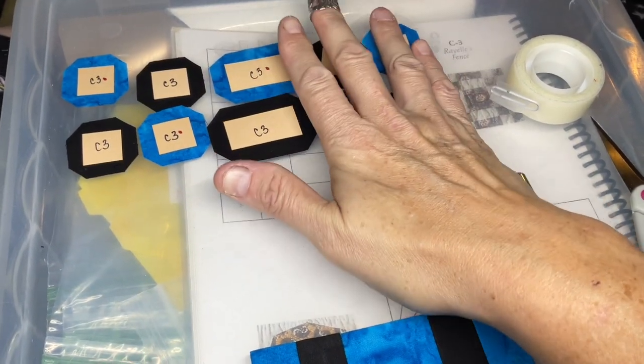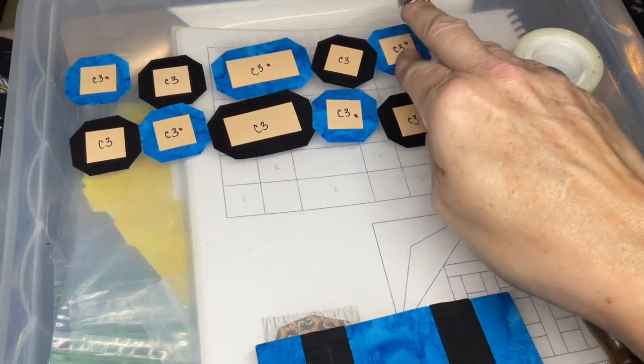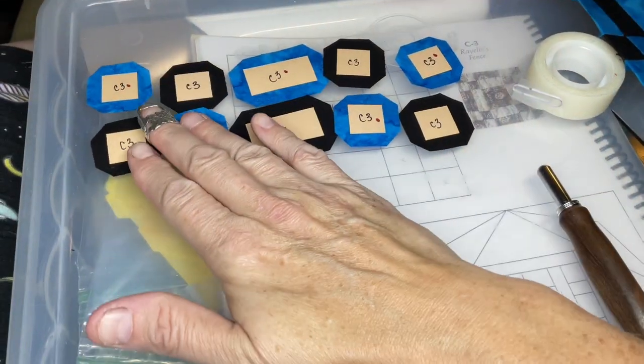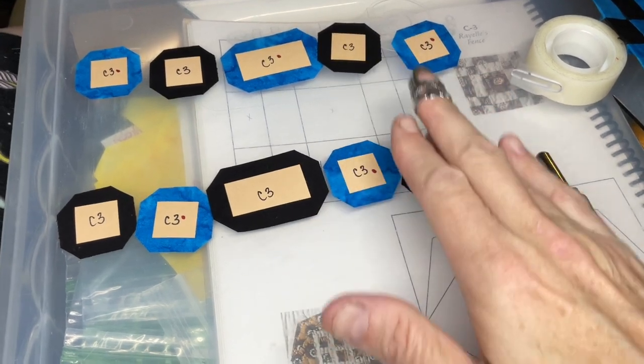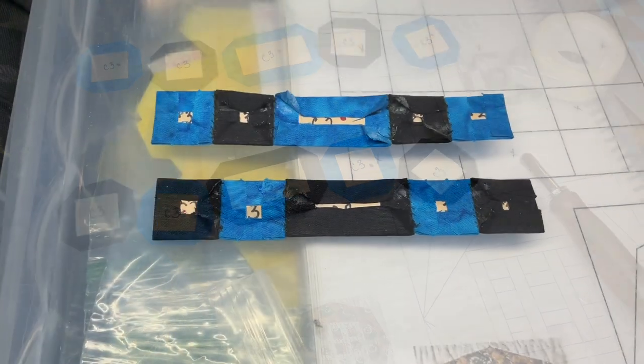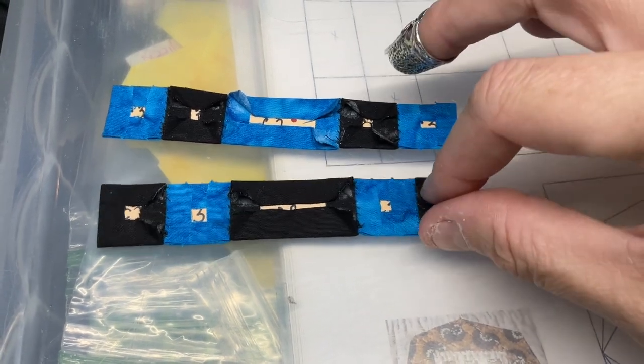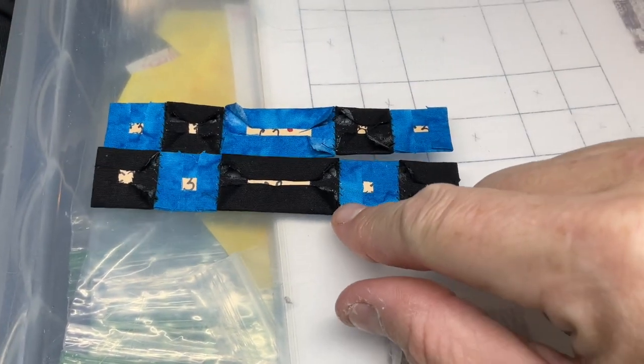I'm going to attach them together before attaching to the rest. Let me get these rows basted - let me get this row basted and assembled first. I've got the top two rows all assembled, now I'm going to stitch them together.